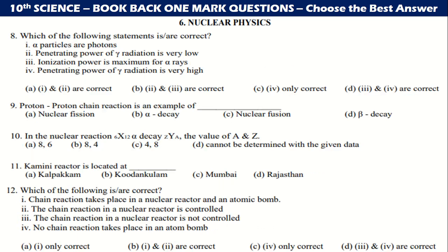The lead aprons are used to protect us from gamma radiation. Book inside, that is 8th question, which of the following statements are correct? That means the third one, that is third and fourth one is correct. Proton chain reaction is an example for nuclear fusion. In a nuclear reaction 6C¹² decay, the value of A and Z is 8,4 is the correct answer.